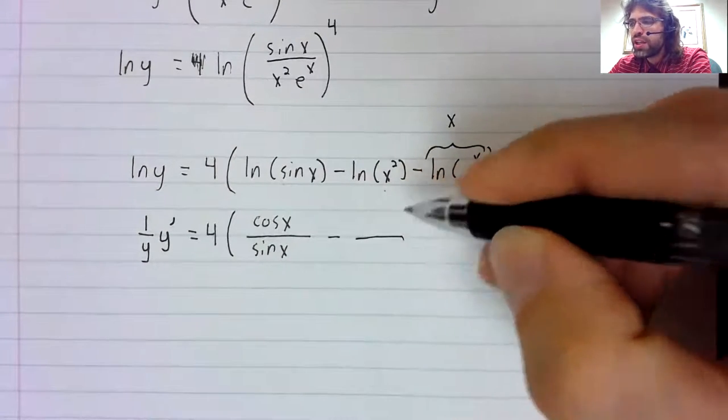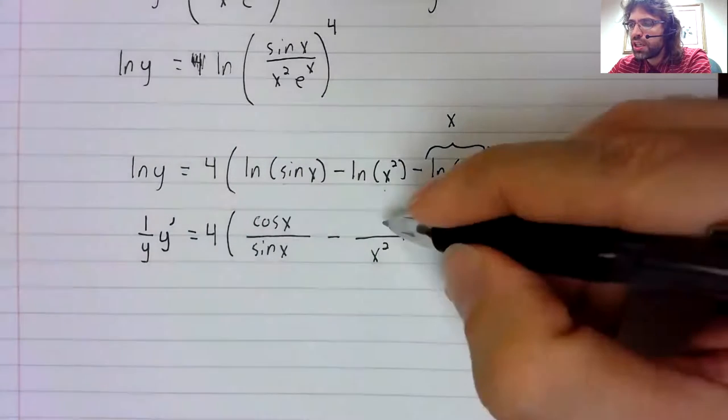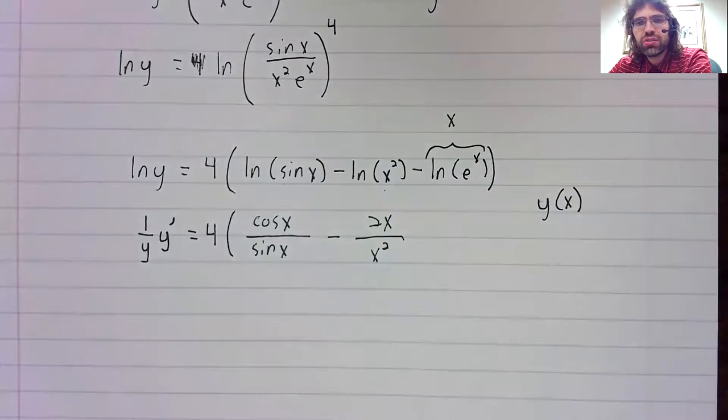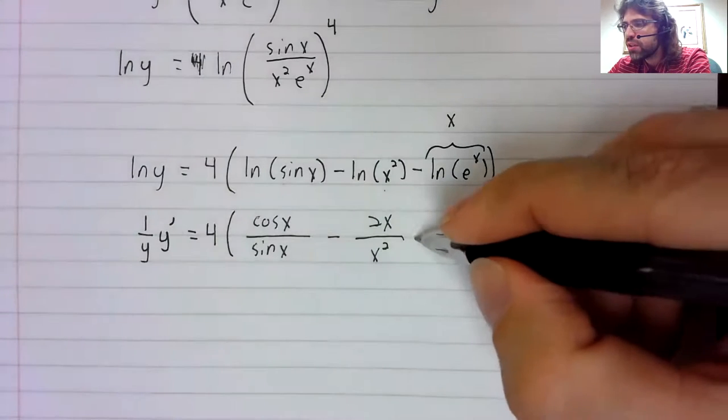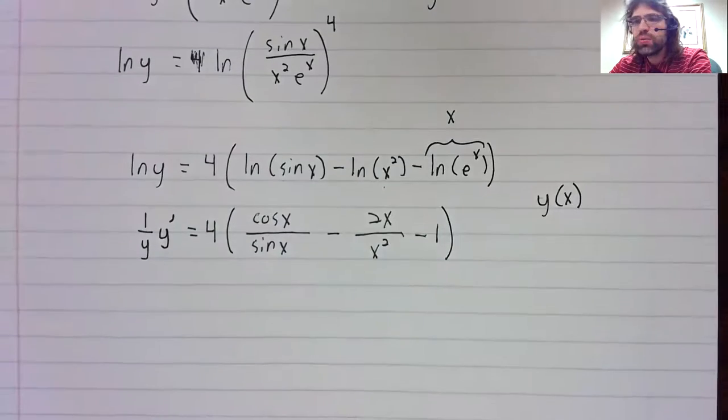The derivative of the natural log gives you an x squared in the denominator. The derivative of x squared is 2x. The derivative of x is 1.